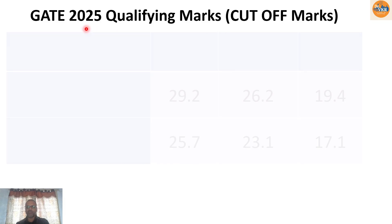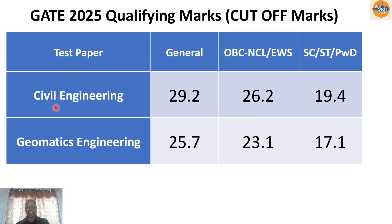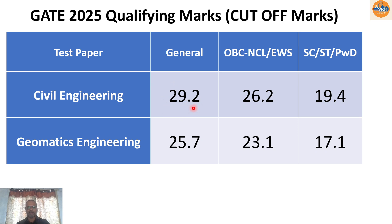The GATE qualifying cutoff marks: for civil engineering, the general category cutoff is around 29.2 and for geomatics it is 25.7. For SC/ST/PWD categories, it is 19.4 and 17.1 respectively. For civil engineering, a minimum of around 30 marks puts you on the safe side. The cutoff may vary each year, but more or less 30 marks has been the cutoff mark.